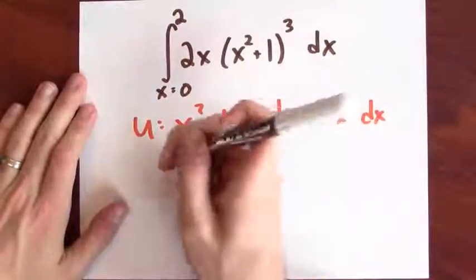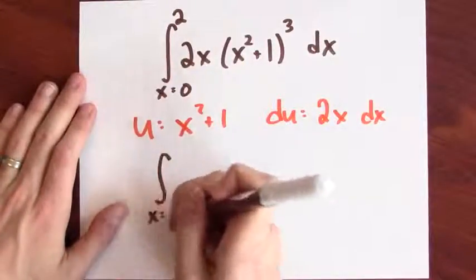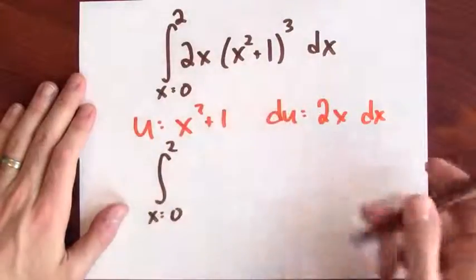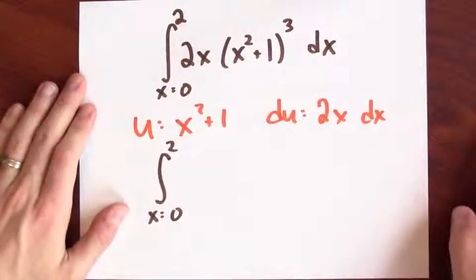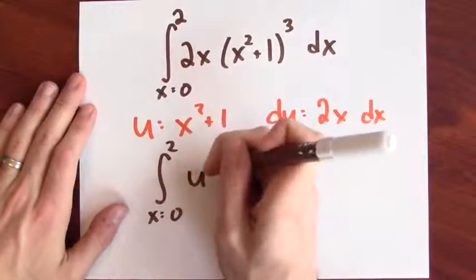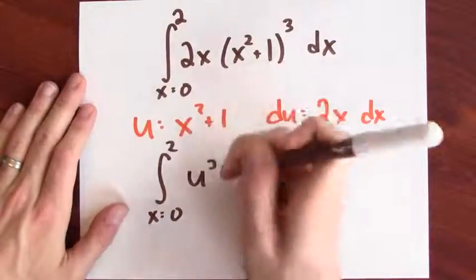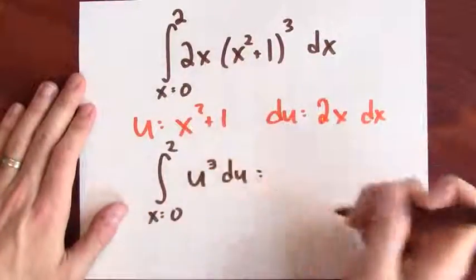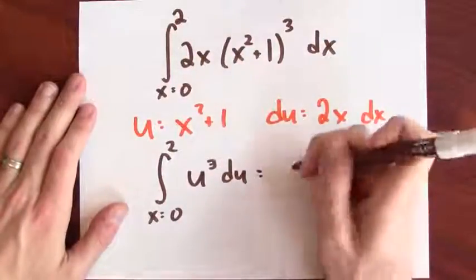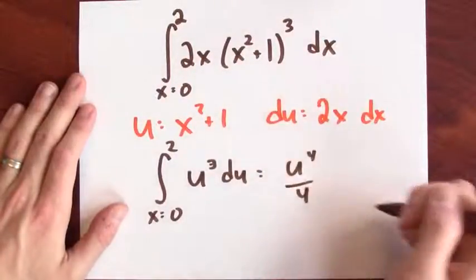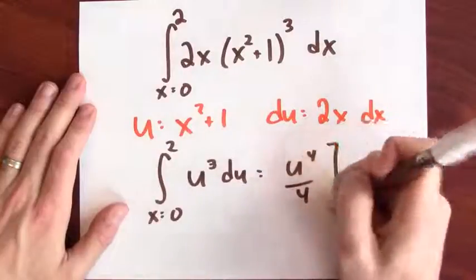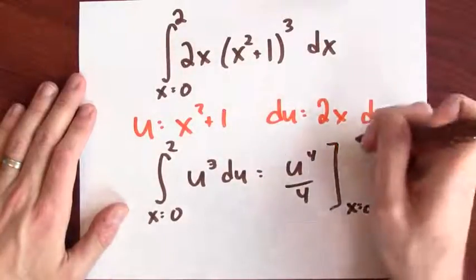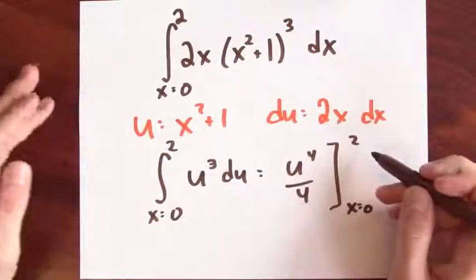So this integration problem becomes the integral x goes from 0 to 2. But what's the integrand now? It's u cubed du. And I know an antiderivative of u cubed. It's u to the fourth over 4.